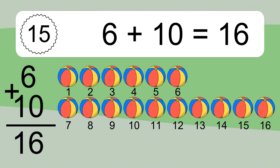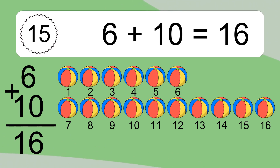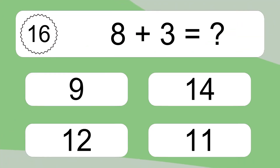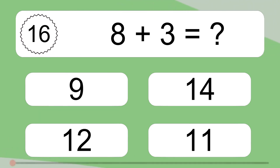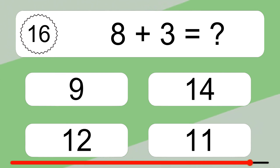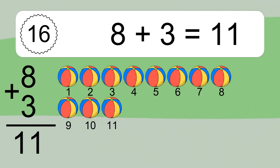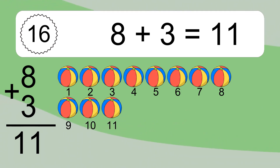6 plus 10 equals what? 1, 2, 3, 4, 5, 6, 7, 8, 9, 10, 11, 12, 13, 14, 15, 16. 8 plus 2 equals what? Let's count it. 1, 2, 3, 4, 5, 6, 7, 8, 9, 10.